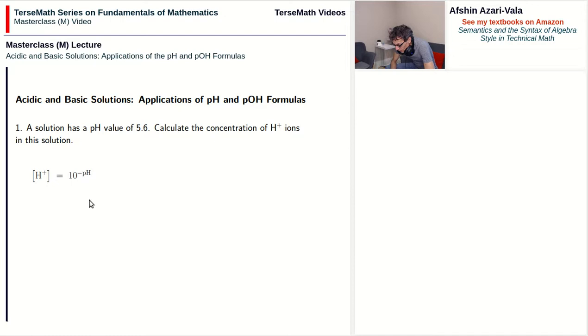We start with the formula: the concentration of H plus is equal to 10 to the power of negative pH, and we replace pH with 5.6. Now we have to work out the exponent 10 to the power of negative 5.6.